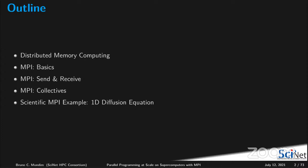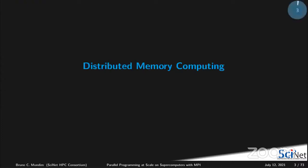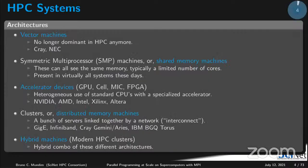Let's refresh a little bit about distributed memory computing. Here I have a list basically following roughly the historic appearance of each of these architectures of HPC — high performance computing, you could call it a supercomputer as well. This is roughly a historical order of how these machines came to life.